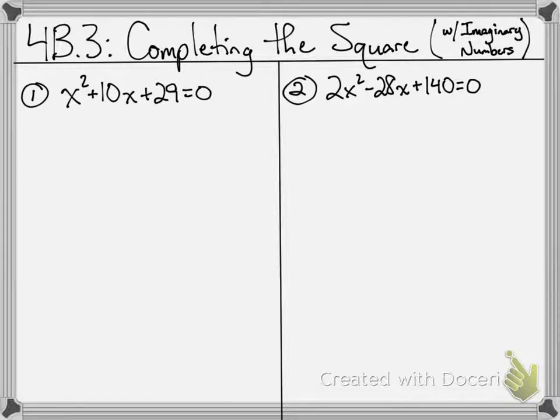In order to complete the square, first thing you have to do is variables have to be on one side, the constant has to be on the other. First thing I'm going to do is subtract 29, and I'm going to have x squared plus 10x equals negative 29.